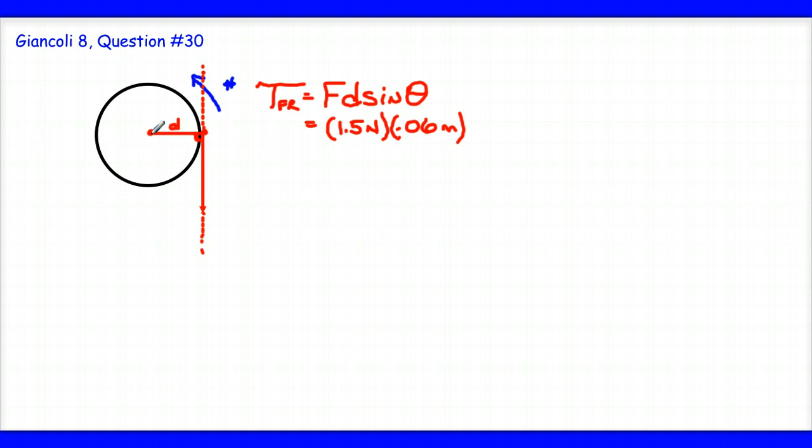1.5 times 0.06 times the sine of 90. Just to be formal, we'll go ahead and put that in here. And when we do all of that, we get a value of 0.09, 0.090 newton meters, or 9 times 10 to the minus 2 newton meters.